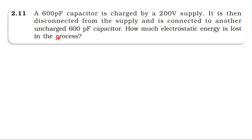From the topic electricity, potential, and capacitors, topic level 2.11. A 600 picofarad capacitor is connected to a 200 volt supply. It is then disconnected from this supply and connected to another uncharged 600 picofarad capacitor. How much electrostatic energy is lost in the process?